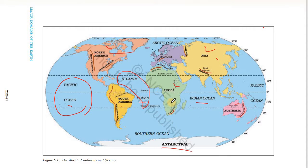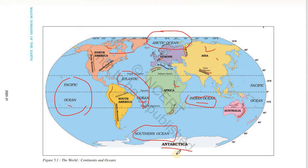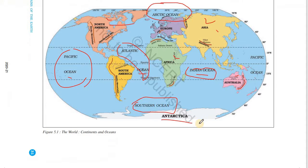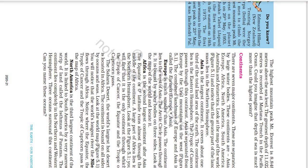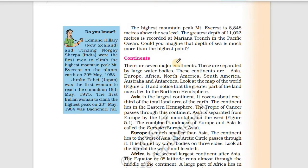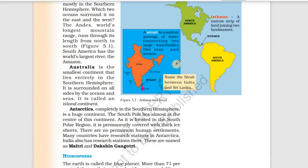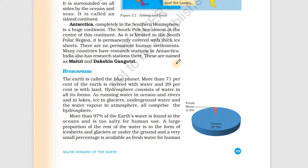We have also read about oceans. There are five oceans. The Pacific Ocean is the biggest. The second is the Atlantic Ocean. The Indian Ocean is near India. The Arctic Ocean is in the northern hemisphere, and the Southern Ocean is in the southern hemisphere. Now students, we will read about the hydrosphere.